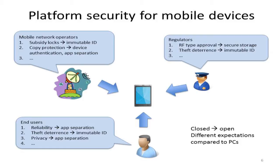Once sensitive information is on a device accessible to certain applications — for example, a song accessible to a music player — they also had to separate between applications. These systems started as embedded systems where there was no need for application separation. Now that you have applications from different sources, some with privileged access, you need separation partly for security but also for reliability: if an application crashes, it shouldn't crash the whole system. So they needed mechanisms like application separation.